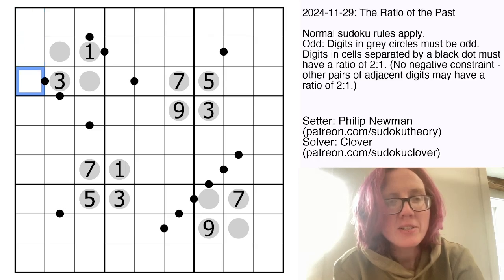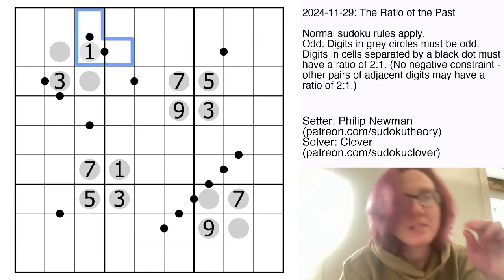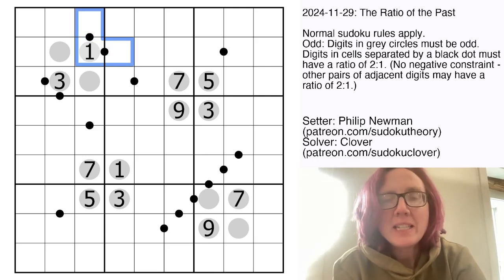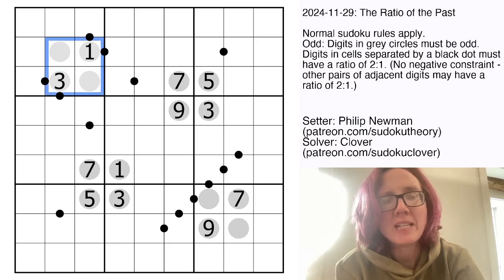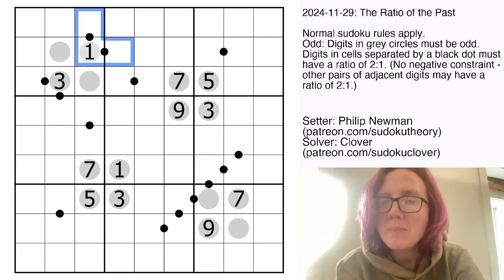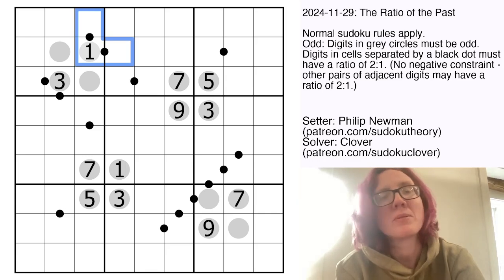In addition, we have ratio pairs. These black dots indicate that the two digits on either side of the dot are in a 1 to 2 ratio. In other words, one of them is exactly twice as big as the other. Finally, there are some gray circles in the grid. Digits in gray circles have to be odd. And also, it's worth noting that not all of the possible black dots have been given. So there might be other pairs of digits somewhere else in the grid that also have a 1 to 2 ratio that haven't necessarily been marked with a black dot.